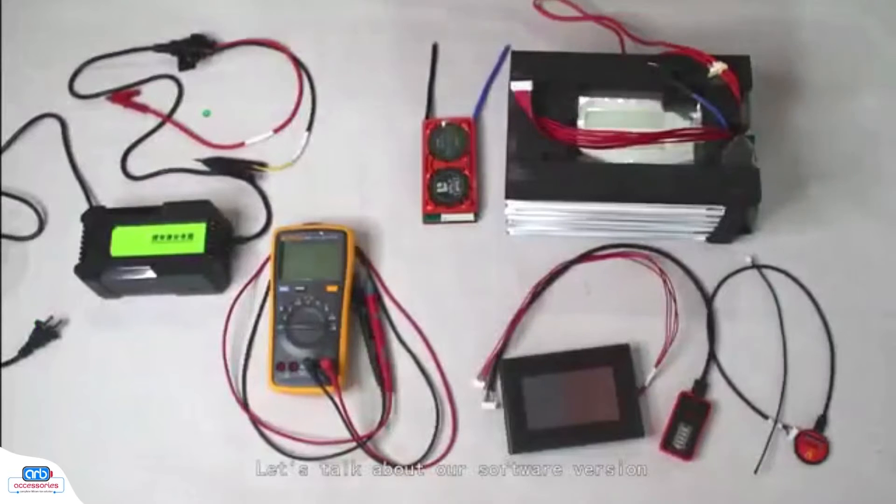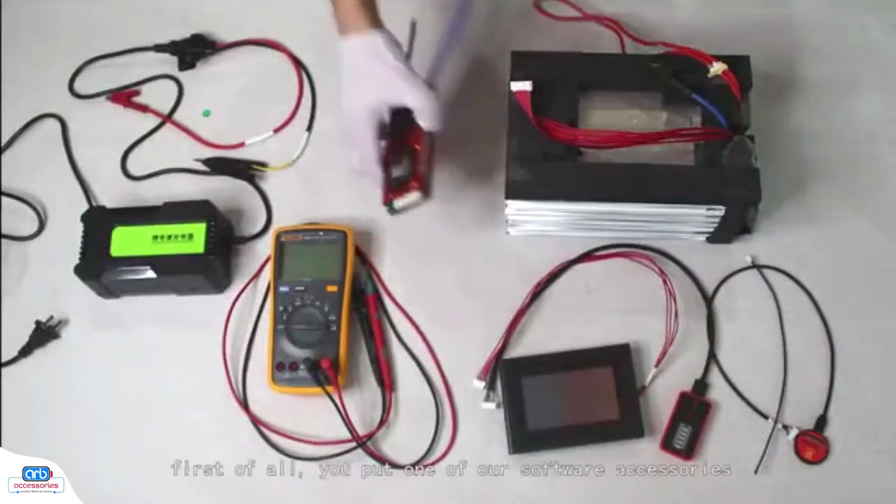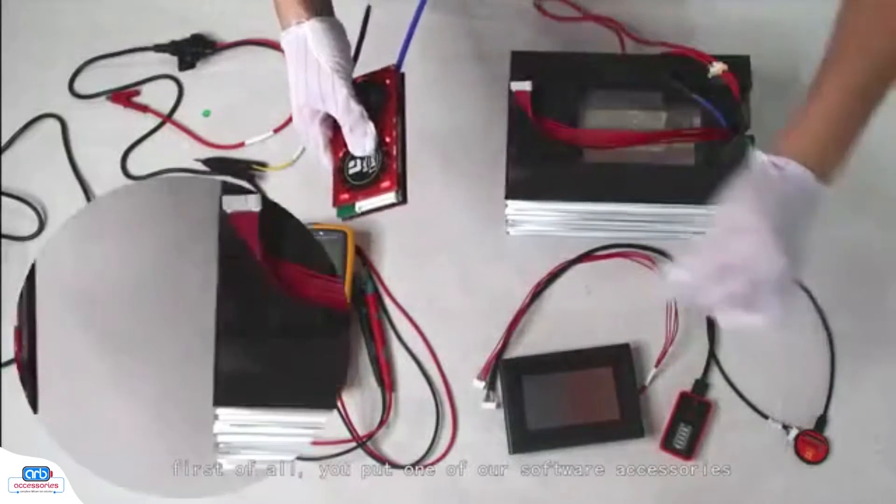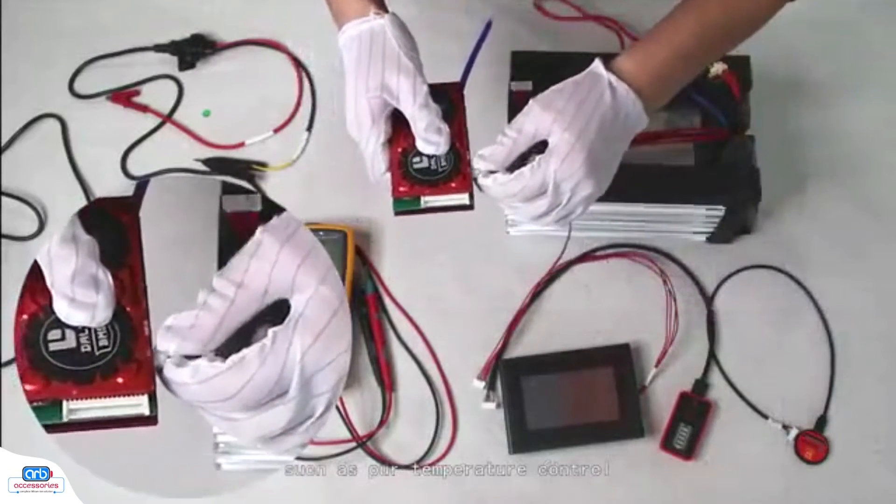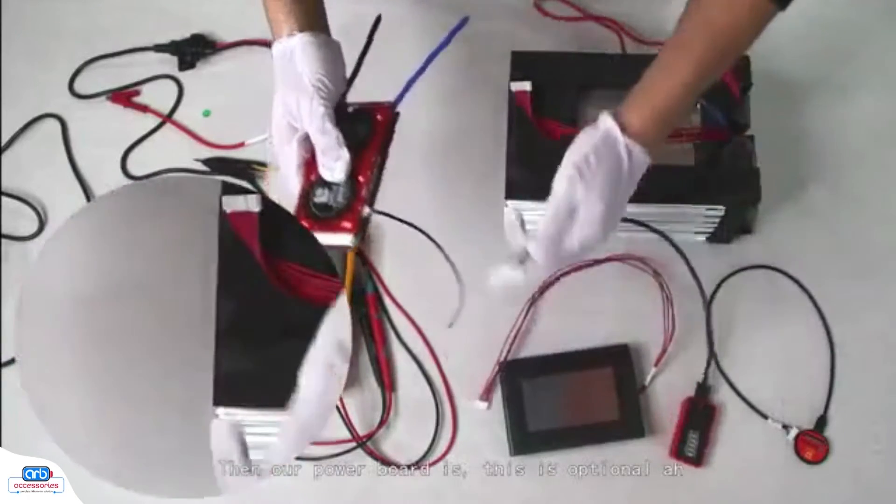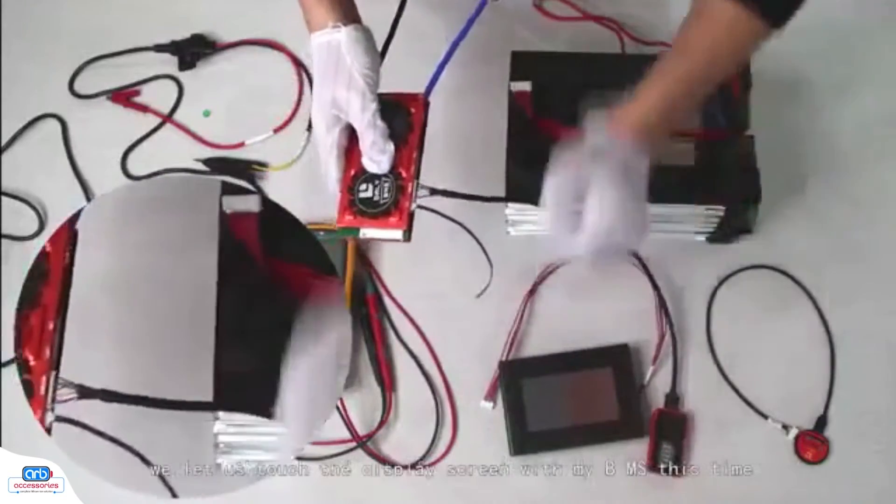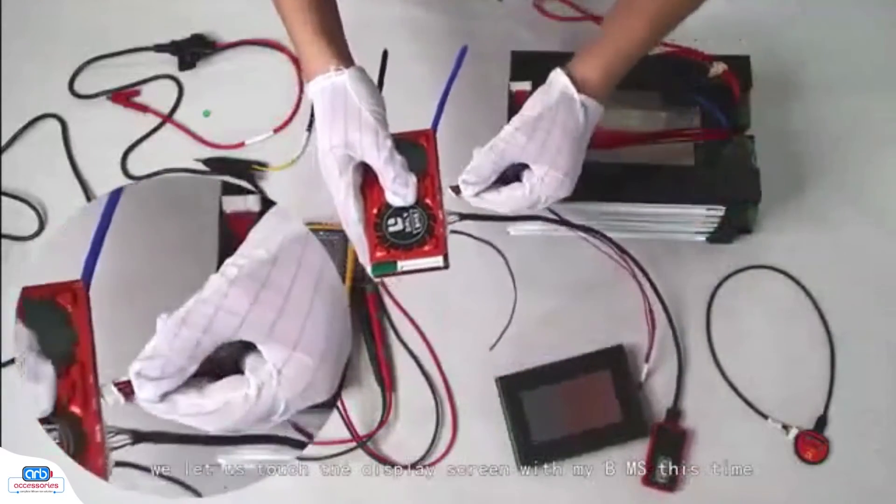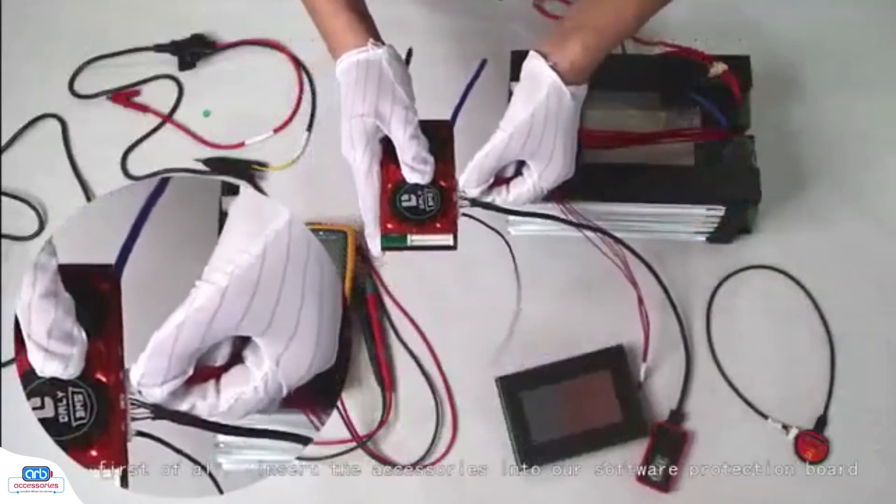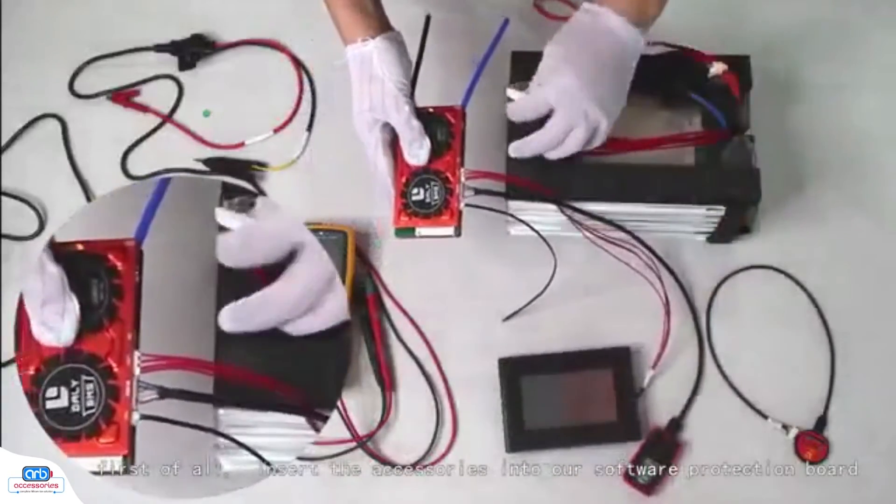Next, let's talk about our software version and his specific wiring operation procedure. The first step is to put one of our software accessories, such as our temperature control, which is standard. Our power board is optional. To facilitate our demonstration, we'll use our BMS touch display screen. First, insert the accessories into our software protection board.